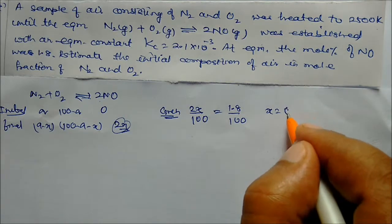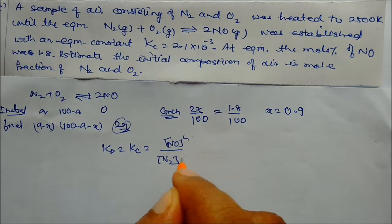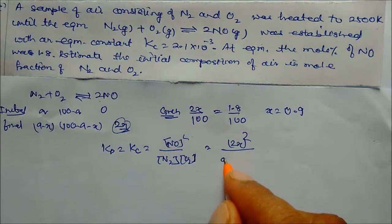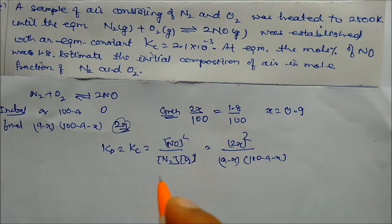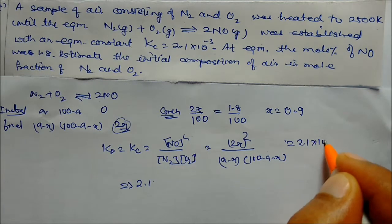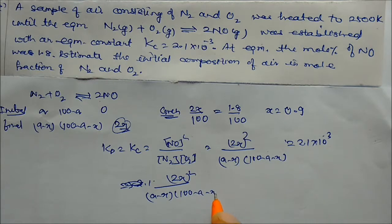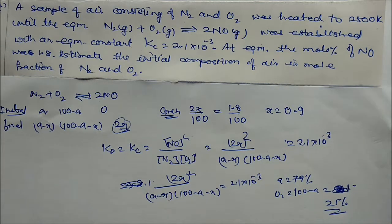Kc = (2x)² / [(A − x)(100 − A − x)] = 2.1 × 10⁻³. With x = 0.9, on solving we get A = 79%, so N₂ = 79% and O₂ = 21%.